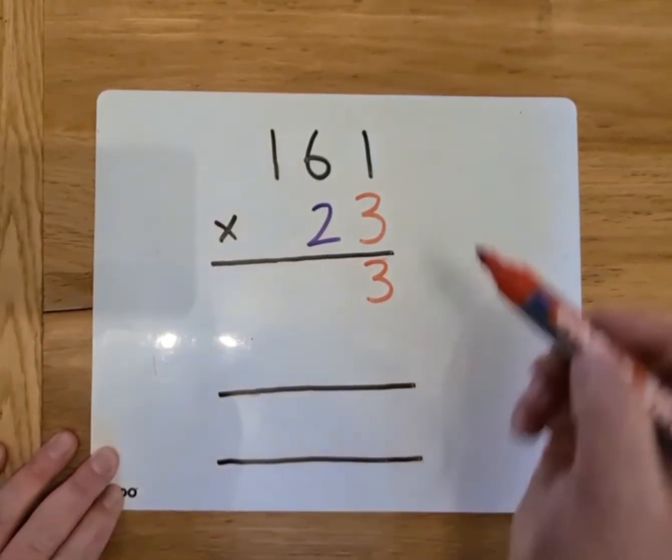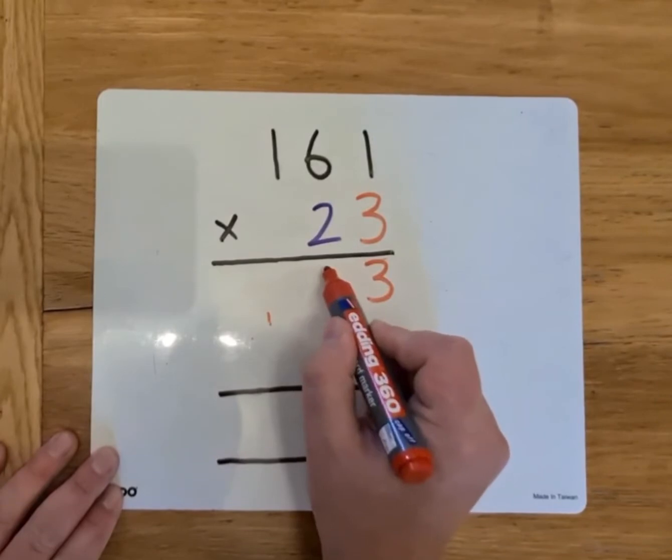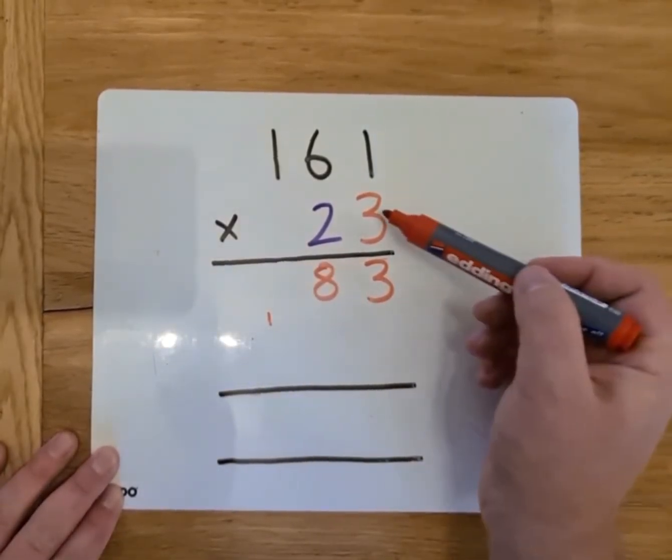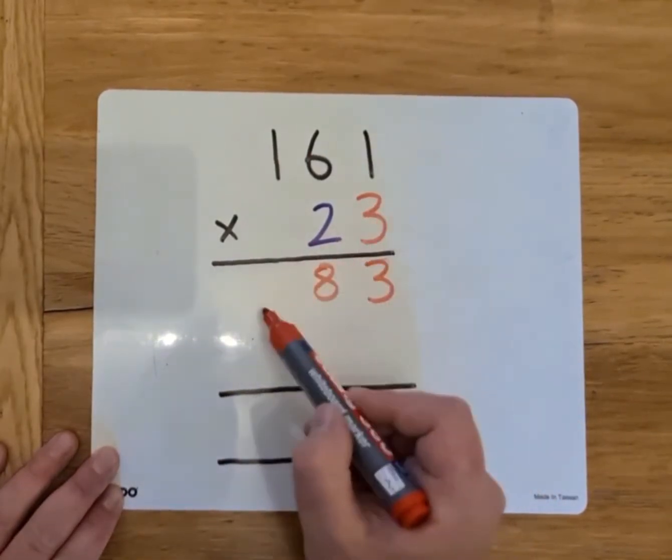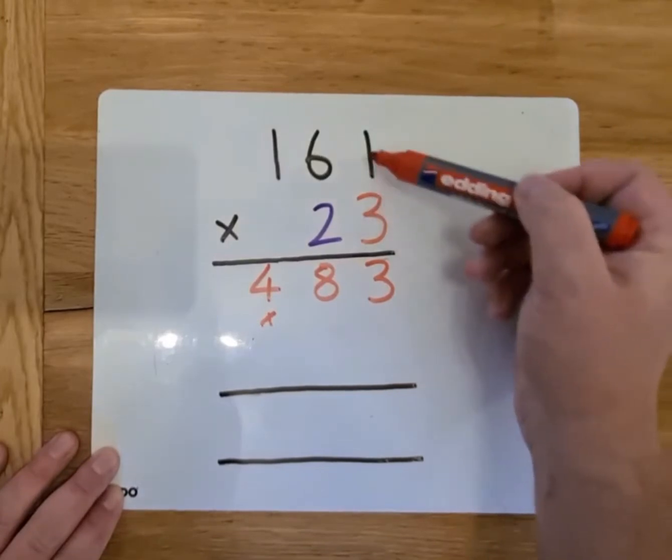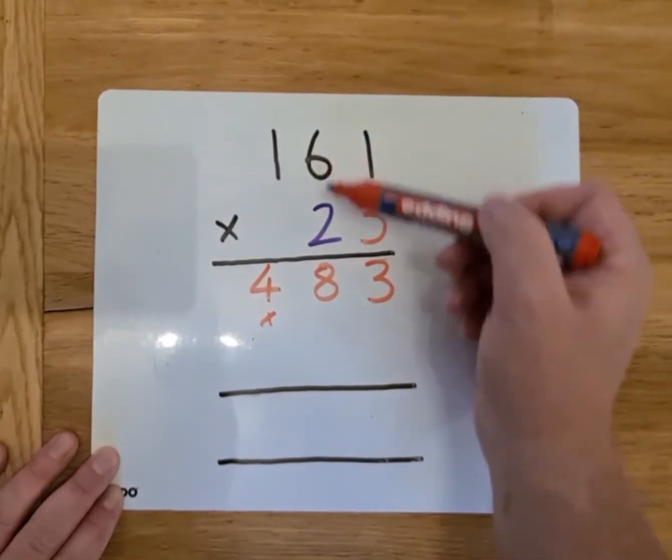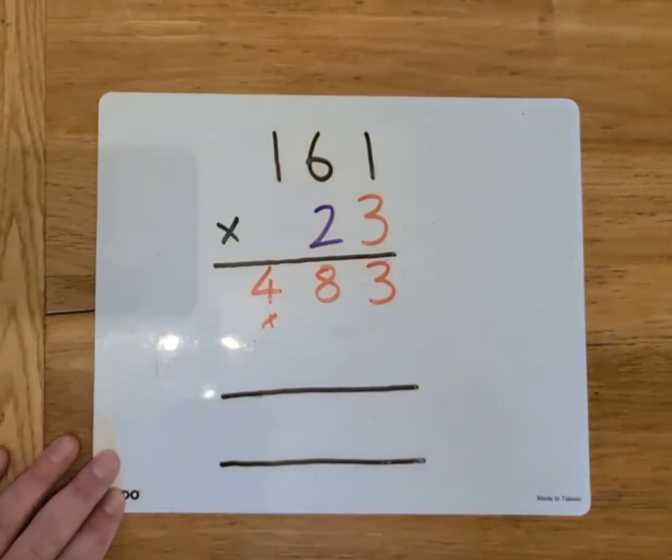Straightforward enough, there's nothing to carry over. 3 times 6 is 18, so I can put my 1 there and my 8 there. And then 3 times 1 is 3, add the extra 1 is 4. So 3 times 1 is 3, 3 times 6 is 18, and 3 times 1 is 3, add the extra 1 is 4.